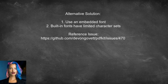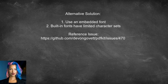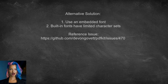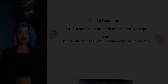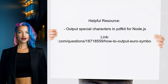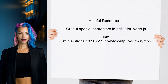An alternative solution suggests that to generate a PDF with non-ASCII characters, you need to use an embedded font. The built-in fonts have a limited character set, which can cause issues with displaying certain characters. Additionally, there is a helpful resource that provides guidance on how to output special characters, like the Euro symbol, in PDFKit for Node.js — this can give you clues on how to handle non-ASCII characters in your PDF generation.